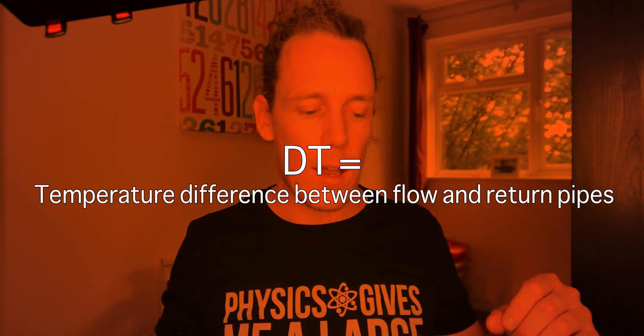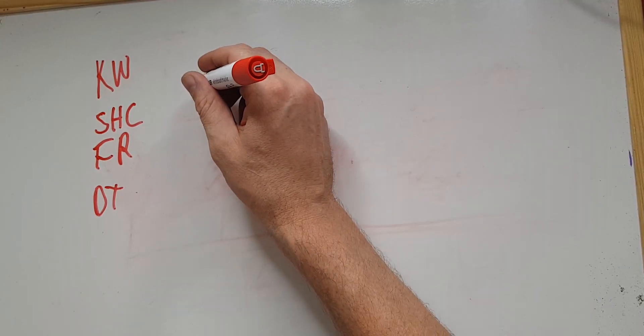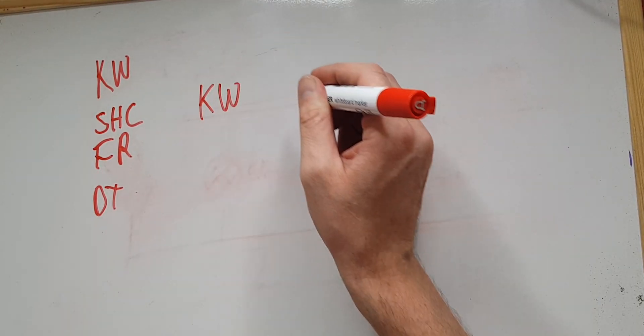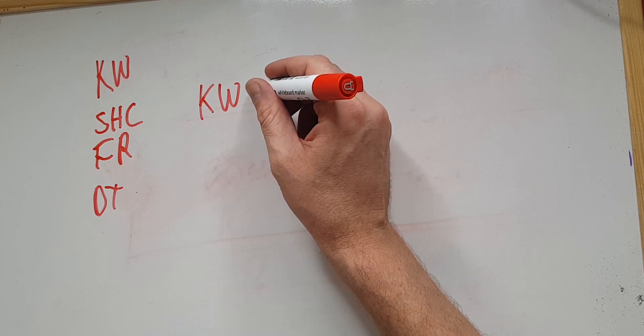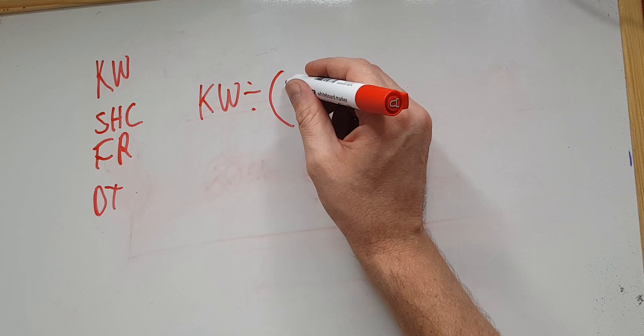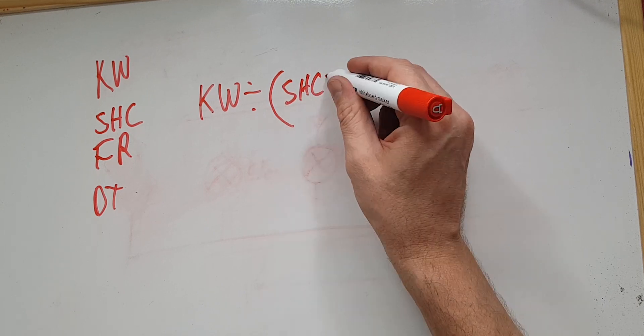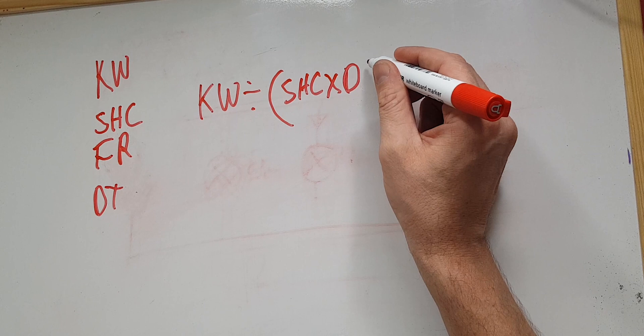Delta T is Latin, basically meaning temperature difference — the differential temperature between your flow and your return. So the calculation in its simplest form is kilowatts divided by specific heat capacity times delta T.